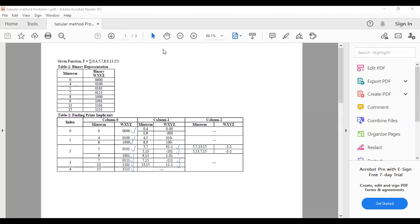First step: given the function, create Table 1 for binary representation. Next, find the prime implicants. Whenever you reduce it further, you use columns like column 1, column 2, and so on.